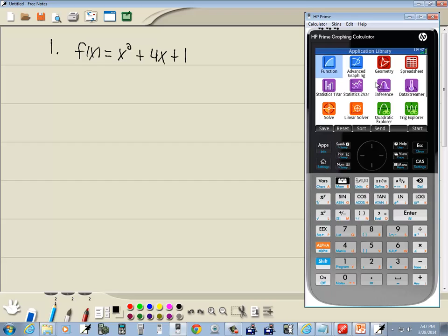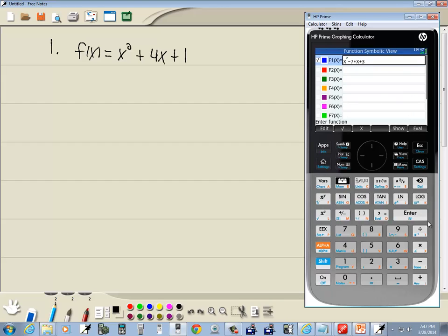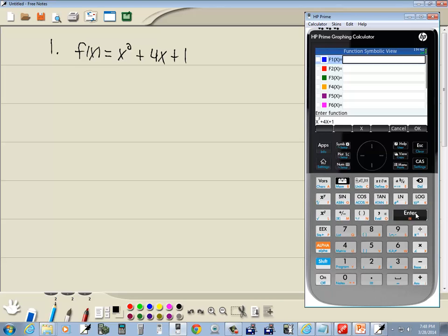Now, let's go put this in our calculator. If you're not in your apps, press your apps button to get here. Then we want to go into functions, so I do enter a function. I'll do a backspace to clean out what I have there. Then I'm going to do my x key, x² + 4x + 1, and press enter.